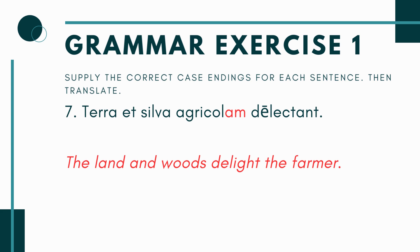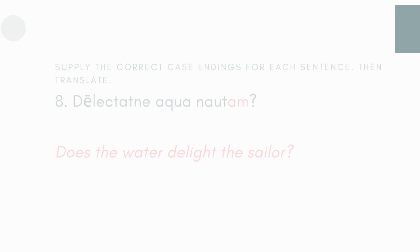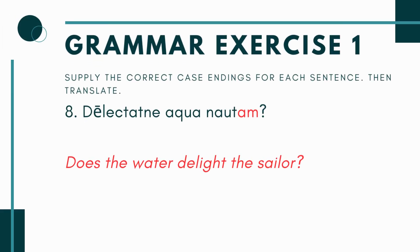Number seven: terra et silva — both words are already nominative singular, so those are my subjects. Together they make a plural subject — the land and the woods — which is why you have delectant at the end, the plural verb. The land and woods delight something. The blank is agricola, but since I already have a subject, it becomes agricolam — a direct object. So: terra et silva agricolam delectant — the land and woods delight the farmer. Farmers like land and woods.